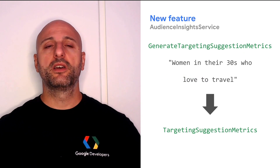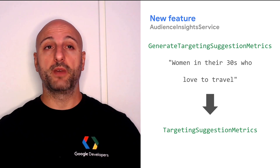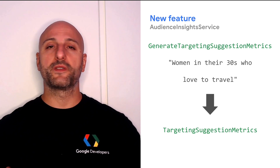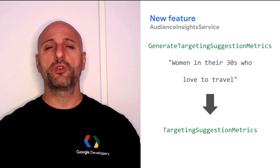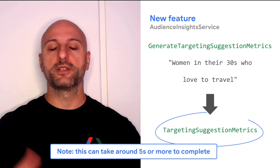Last but not least, there is a new feature in the Audience Insights service. The Generate Targeting Suggestion Metrics endpoint will allow you to translate a free-form text to audience descriptions — such as "women in their 30s who love to travel" — into a targetable audience resource. Of course, this is not everything; these were just my own highlights among the many updates and improvements introduced in version 18. For the complete list of changes included in this new release of the API, just take a look at our release notes. You can find that and other useful links in the video description right below.